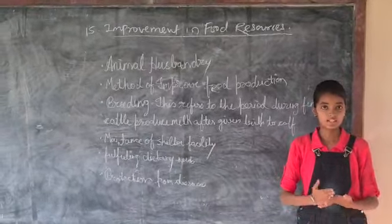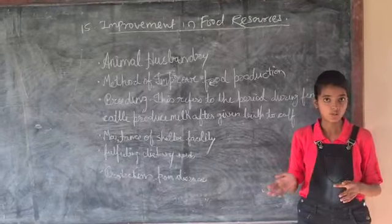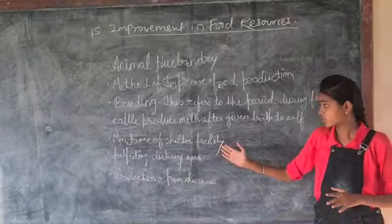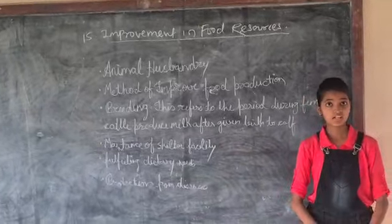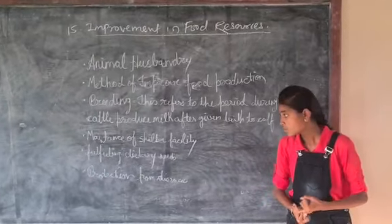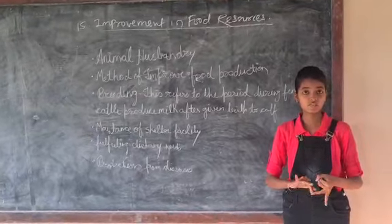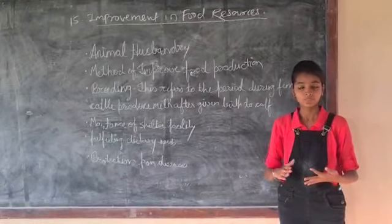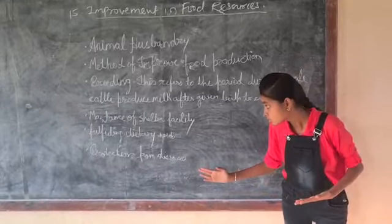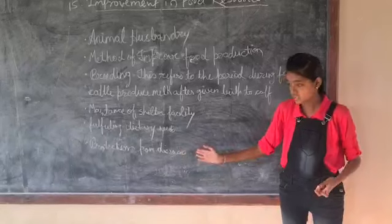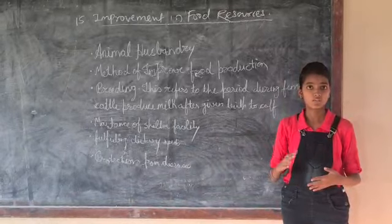For poultry farming, local breeds are crossbred with exotic breeds. Second point, maintenance of the shelter facility: we should clean the poultry farms regularly. For fulfilling dietary needs, for broilers we should give nutritious feed with vitamins; for layers, we should give appropriate feed. For protection from diseases, we should give proper vaccination regularly so that they will be free from disease.